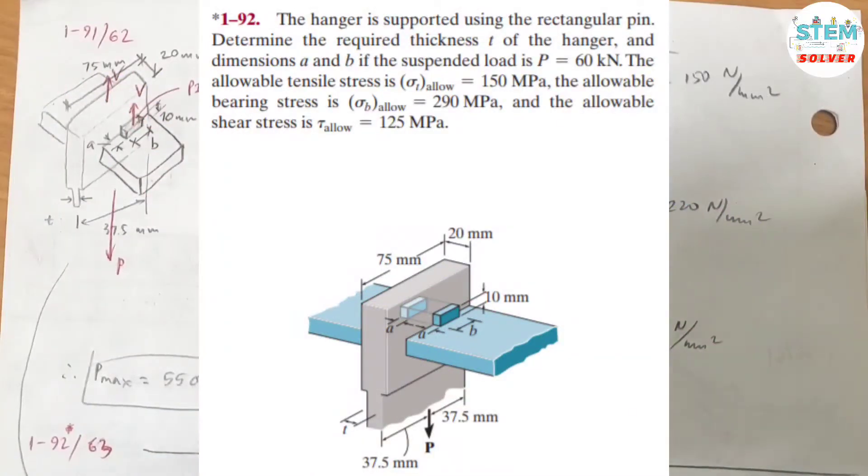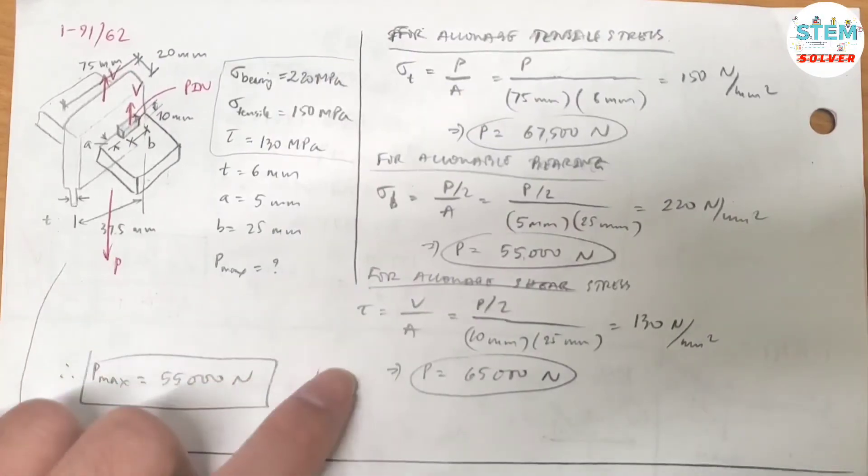The hanger is supported using a rectangular pin. We're determining the required thickness T of the hanger and dimensions A and B if the suspended load is P equals 60 kN. The allowable tensile stress is 150 MPa, the allowable bearing stress is 290 MPa, and the allowable shear stress is 125 MPa.